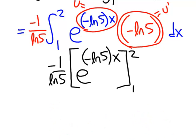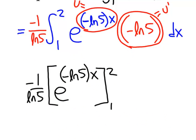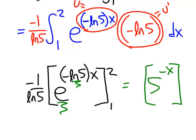We've completed the anti-deriving process, and let's convert back to the original base, which was 5. Let's recall that the E and the ln 5 are what gave us the 5, and we still have a negative X up in the exponent.